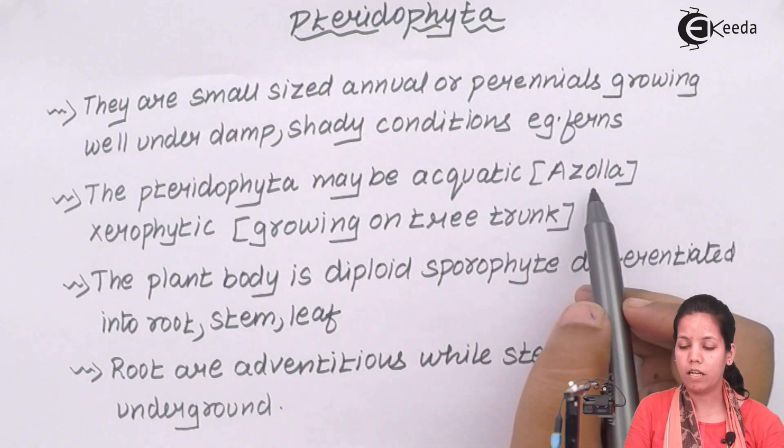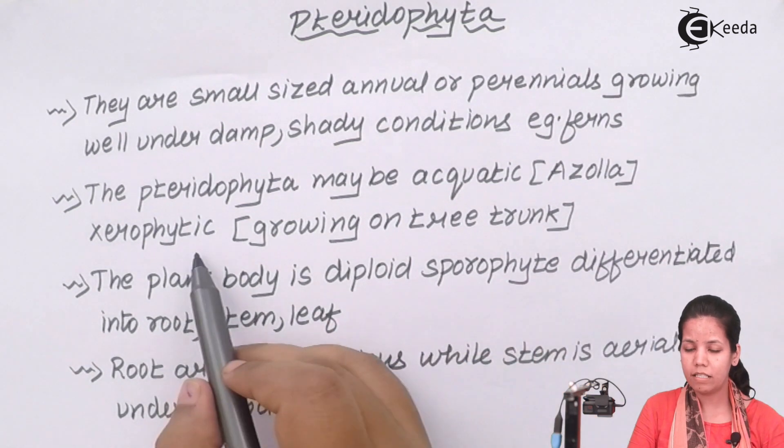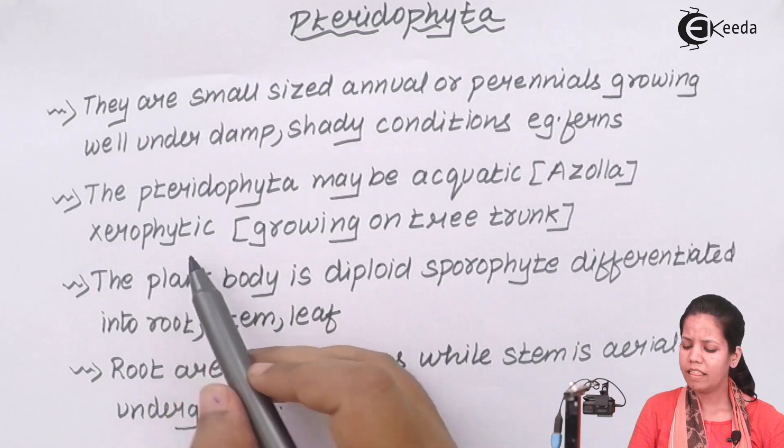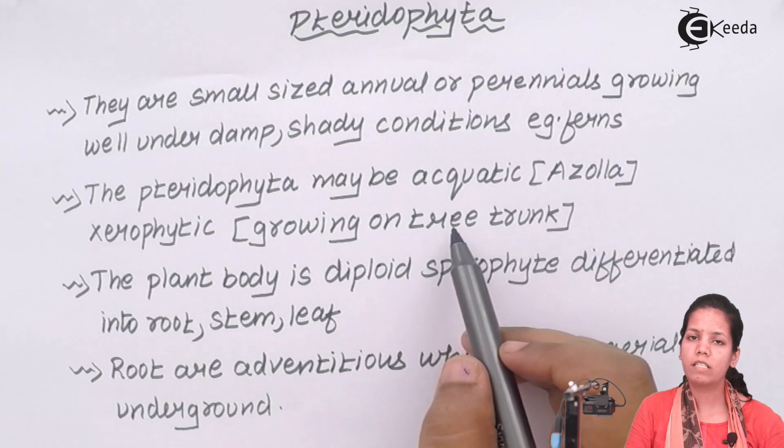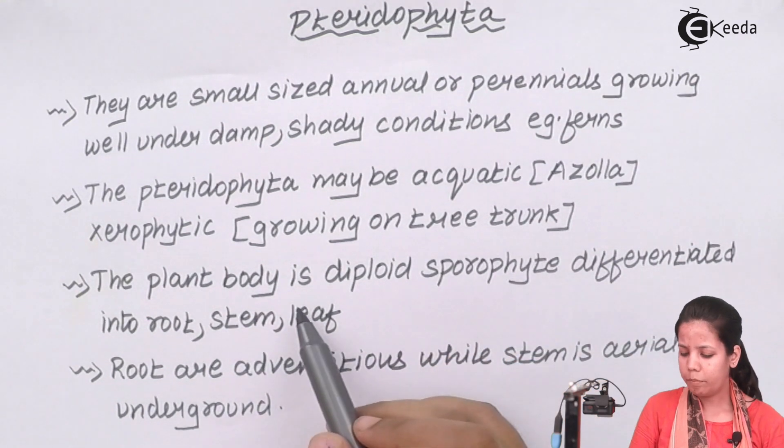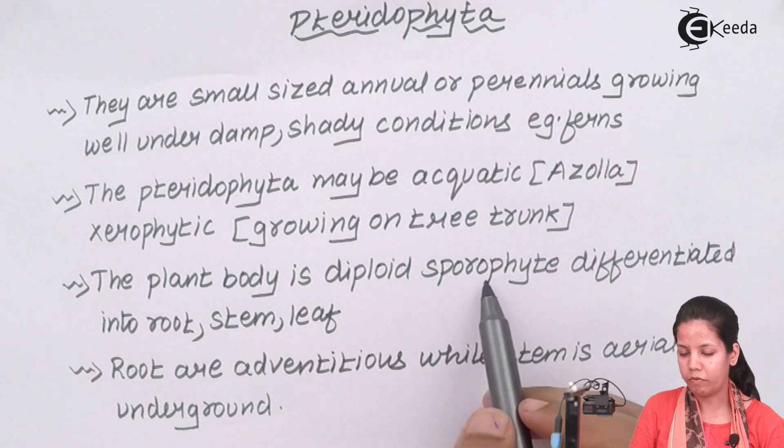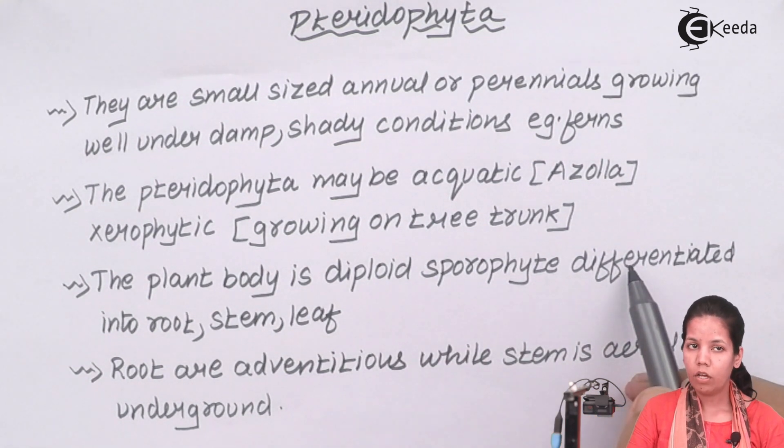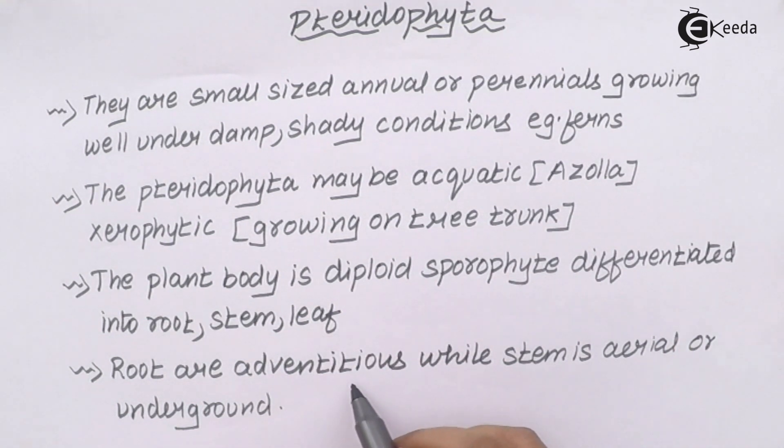One of the pteridophytes is Azolla and sometimes they be desertic kinds, the xerophytic pteridophytes that basically grow on tree trunk. And when they grow on tree trunk they will obviously obtain their nutrition from that host organism. The plant body in pteridophytes is basically diploid sporophytes and it is differentiated into roots, stems, and leaf region.